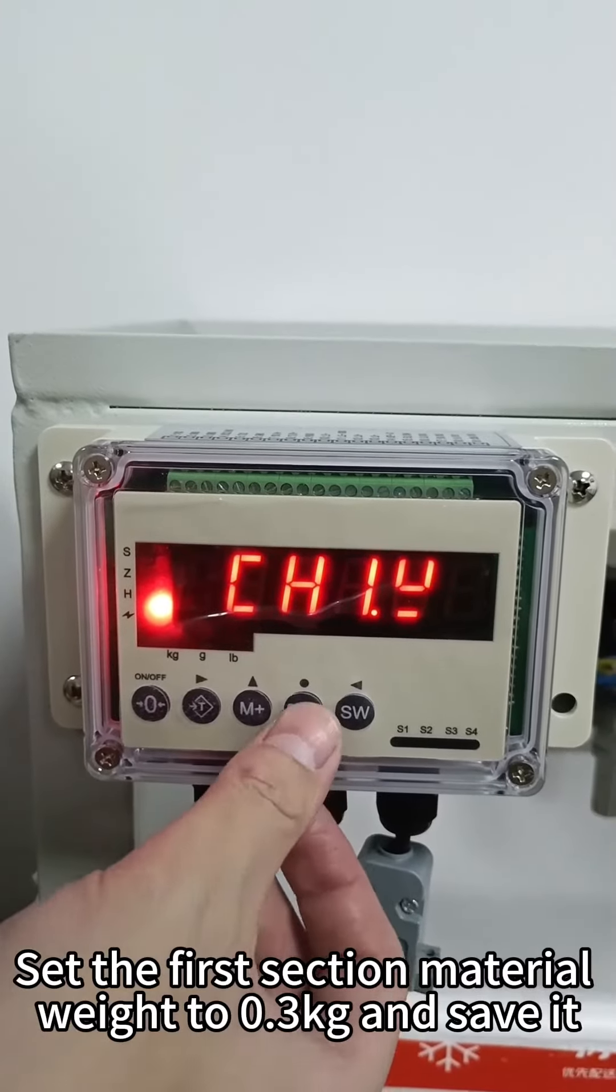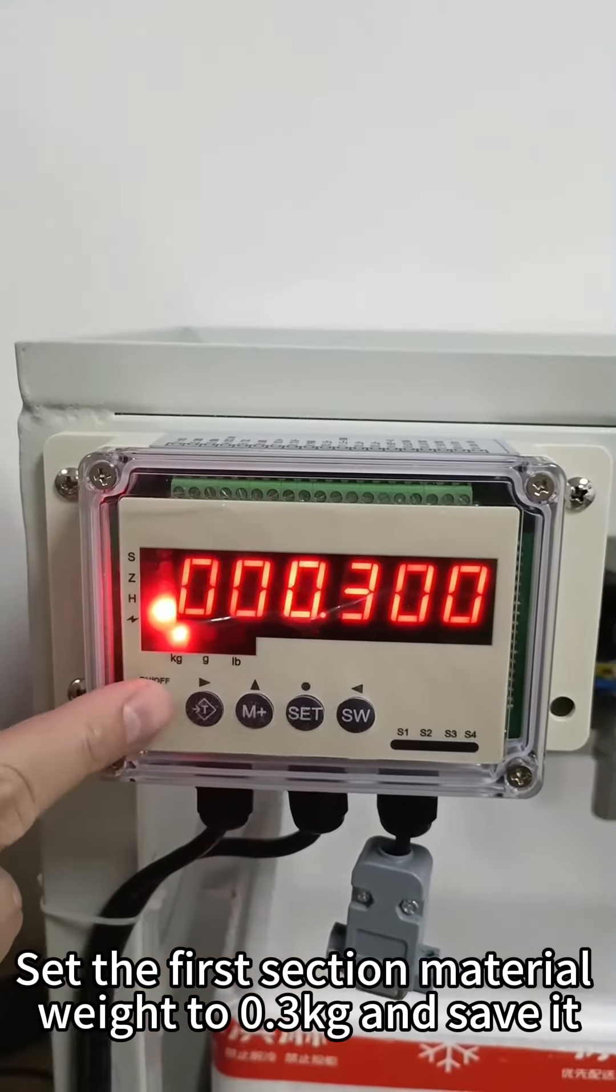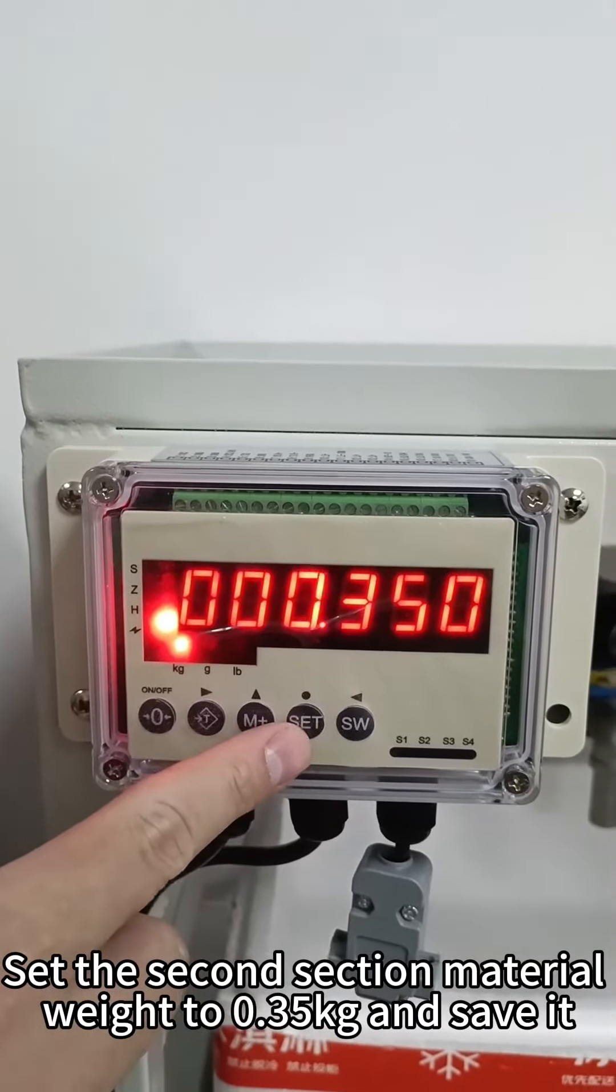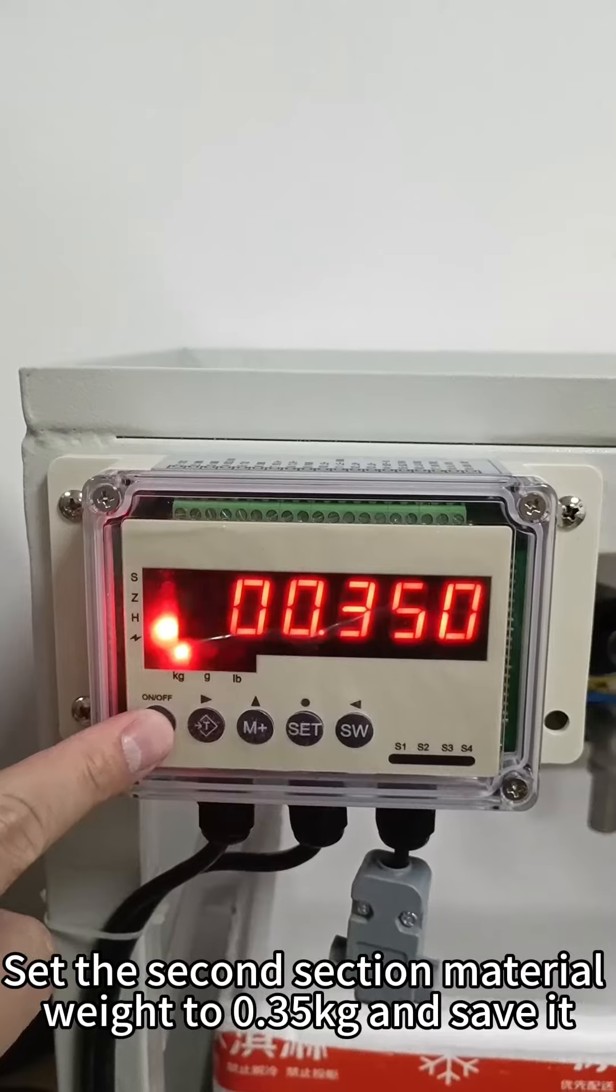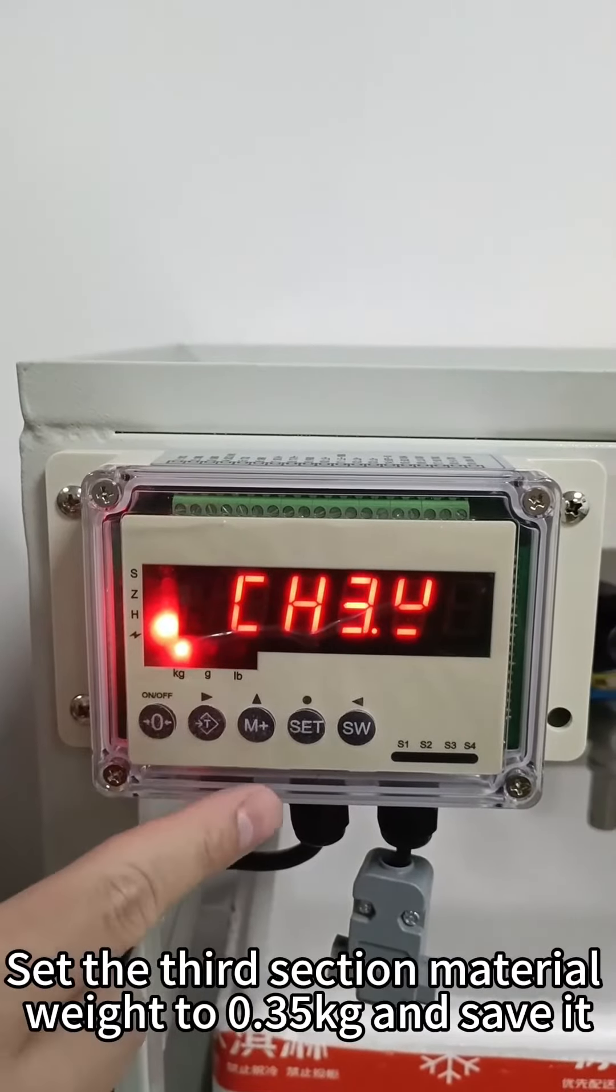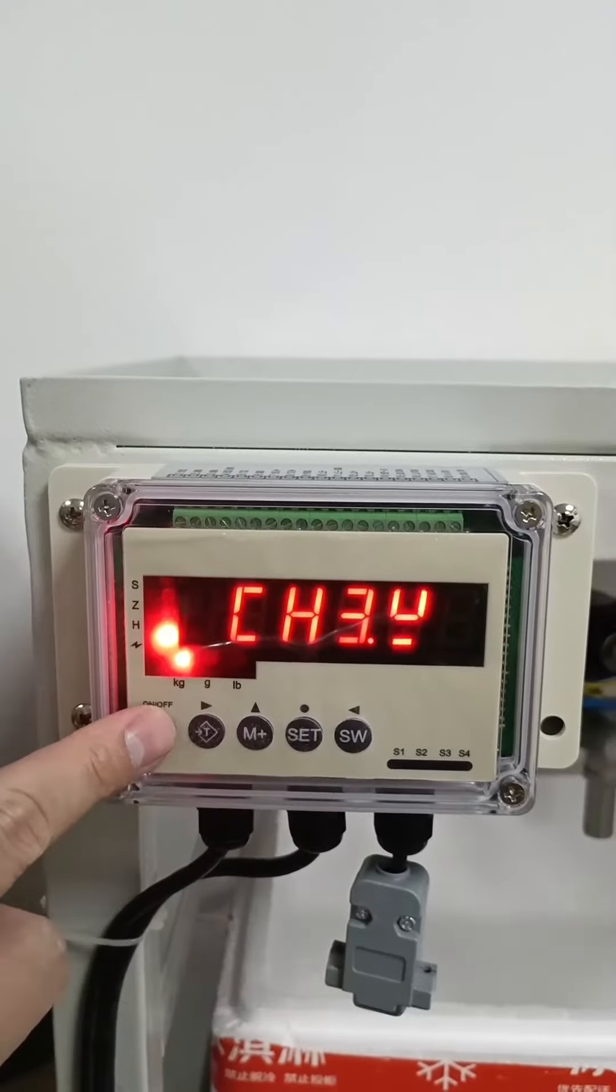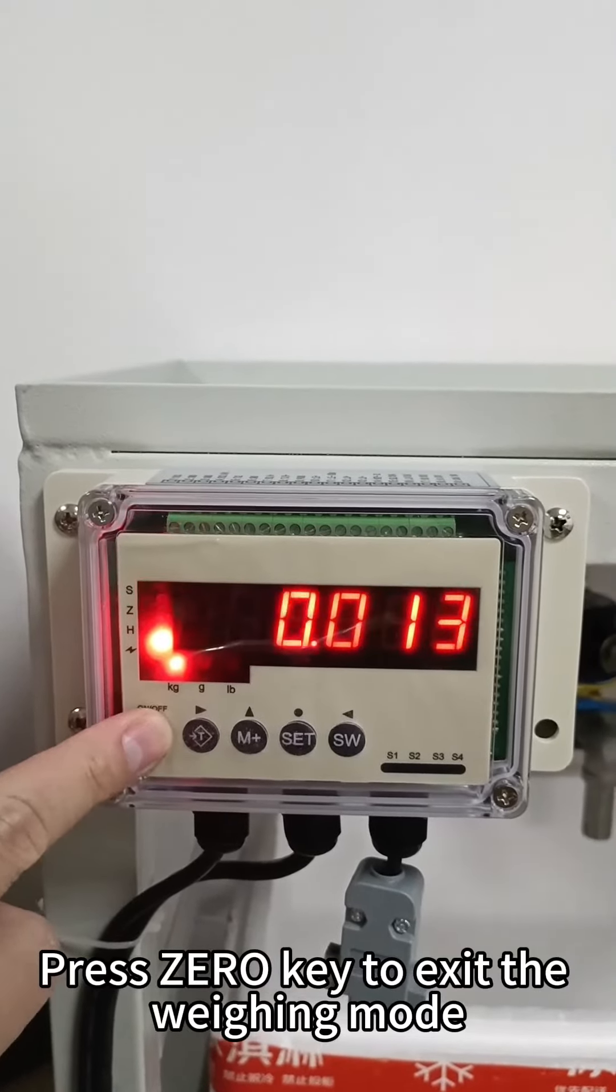Set the first section material weight to 0.3 kg and save it. Set the second section material weight to 0.35 kg and save it. Set the third section material weight to 0.35 kg and save it. Press 0 key to exit the weighing mode.